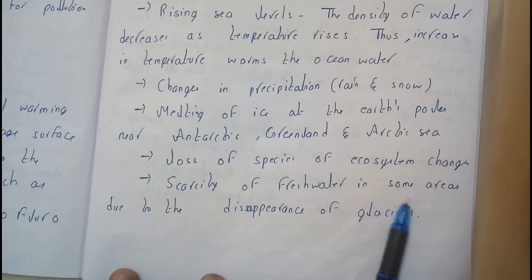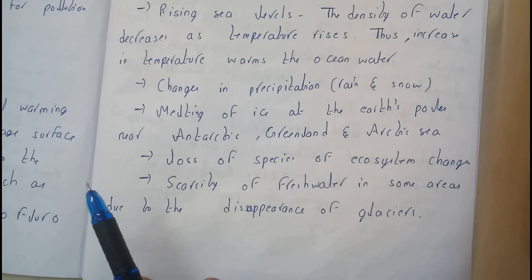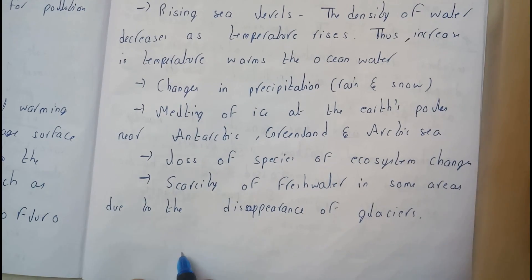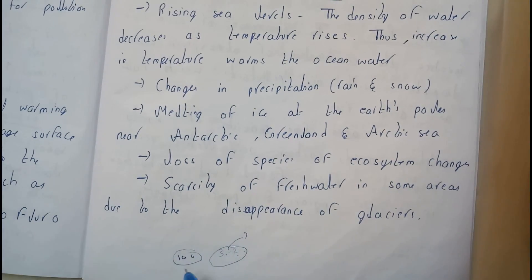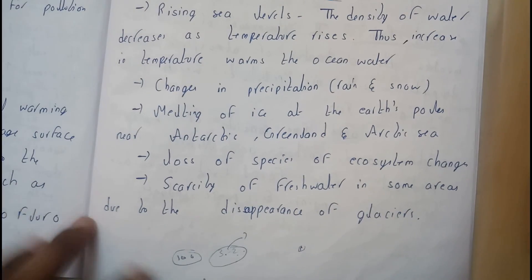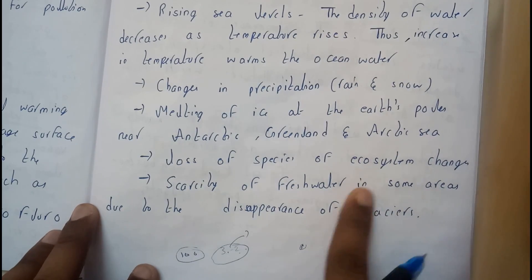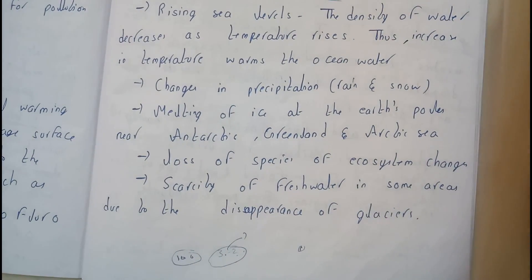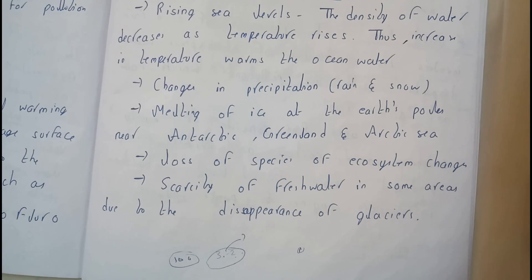Scarcity of fresh water in some areas due to disappearance of glaciers. Out of 100% of Earth's water, only about 2-3% is fresh water, and almost 90% of that fresh water is in the form of ice — glaciers. We are using only the remaining liquid water, which we get from glaciers.